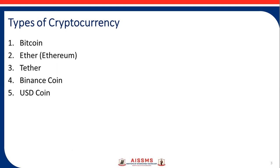A decentralized currency can also make peer-to-peer money transfers faster and less expensive than traditional currency exchange involving a third-party institution. Next is Ether or Ethereum. Ethereum is the token used to facilitate transactions on the Ethereum network. Ethereum is a platform that uses blockchain technology to enable the creation of smart contracts and other decentralized applications.